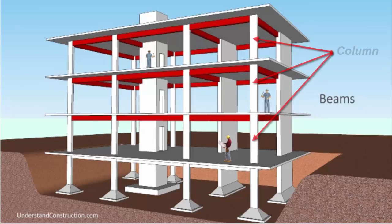Then there is another key element in the form of a column. So what's a column? It's a compression member and is a structural element that transmits through compression the weight of the structure above to other structural elements below.